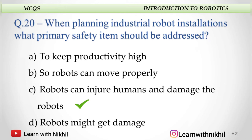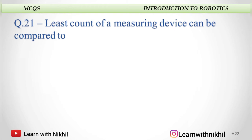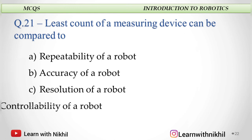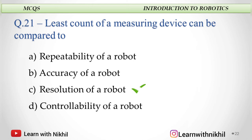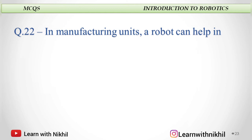Next: Least count of a measuring device can be compared to — repeatability of a robot, accuracy of the robot, resolution of the robot, or controllability of the robot? The answer for least count of a measuring device is resolution of the robot.